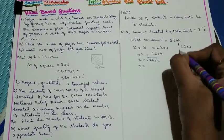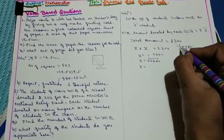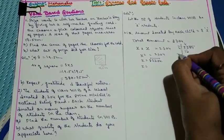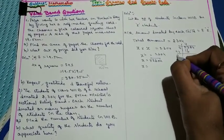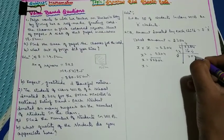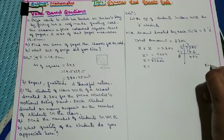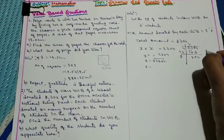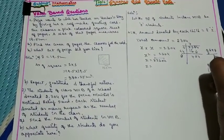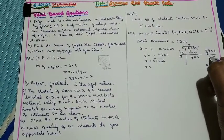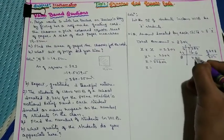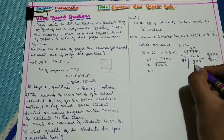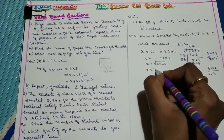Performing long division on 2,304: we make 2 periods — 23 and 04. The nearest perfect square to 23 is 16 (4²). Remainder is 7. Bring down 04 to get 704. Since it ends in 4, the units digit is 2 or 8. Trying 88 × 8 = 704. Remainder is 0. So √2304 = 48.